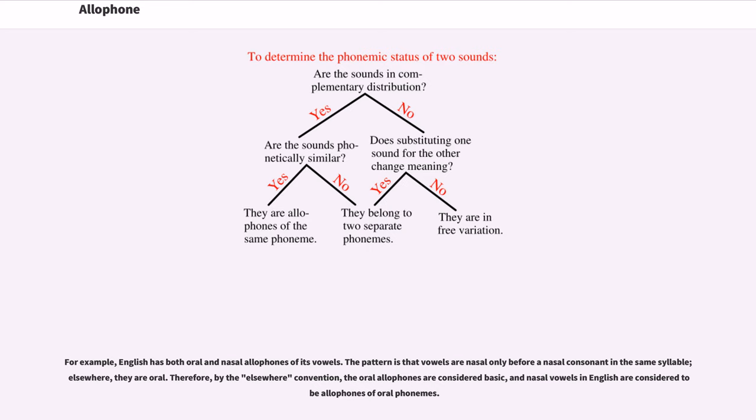For example, English has both oral and nasal allophones of its vowels. The pattern is that vowels are nasal only before a nasal consonant in the same syllable; elsewhere, they are oral. Therefore, by the elsewhere convention, the oral allophones are considered basic, and nasal vowels in English are considered to be allophones of oral phonemes.